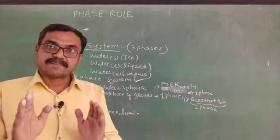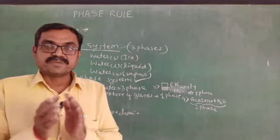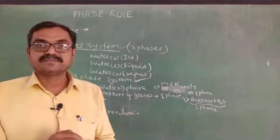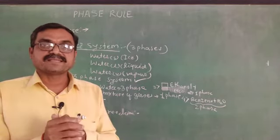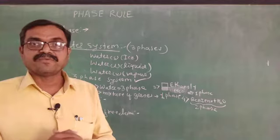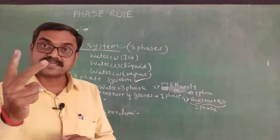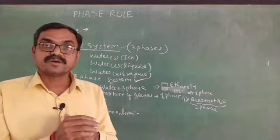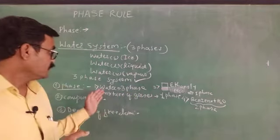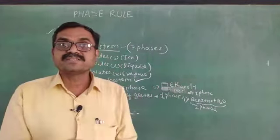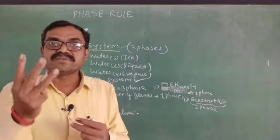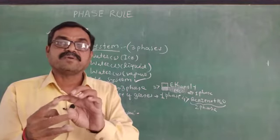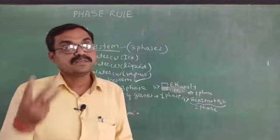To summarize the examples of phase: a homogeneous mixture like ethanol and water is a one-phase system; a mixture of gases is also one phase; immiscible liquids like benzene and water form two phases. In the water system, there is equilibrium between three phases — solid (ice), liquid (water), and vapor — making water a three-phase system.